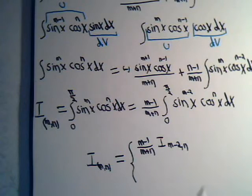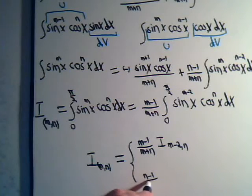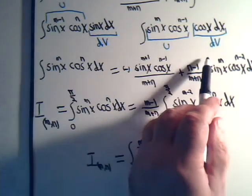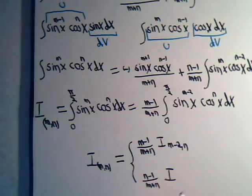And then from this one, we would have n minus 1 over m plus n. And this goes from 0 to pi over 2 now, and we have m, n minus 2.